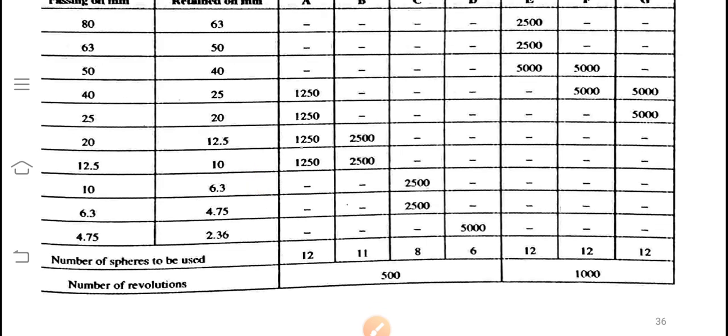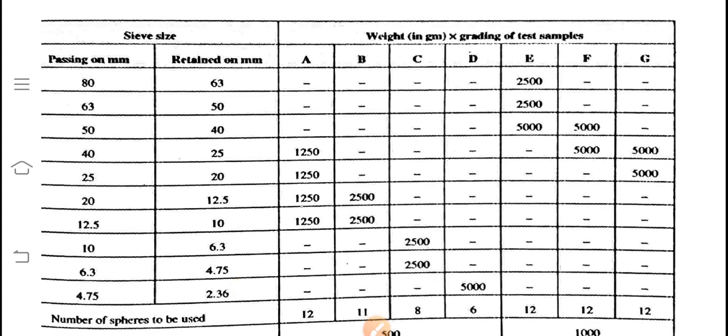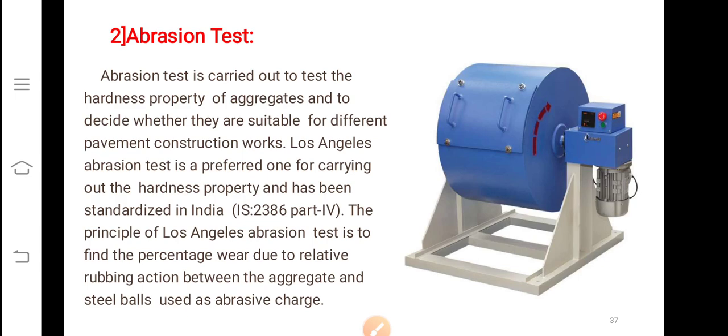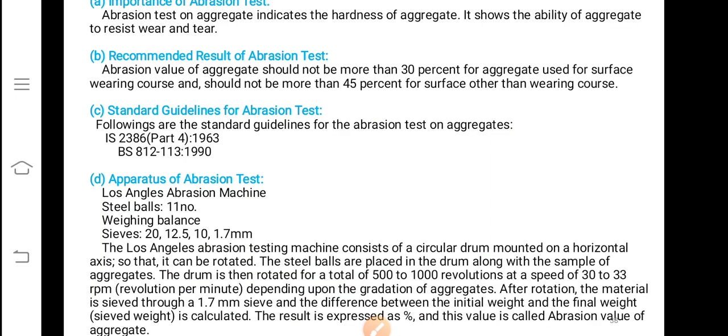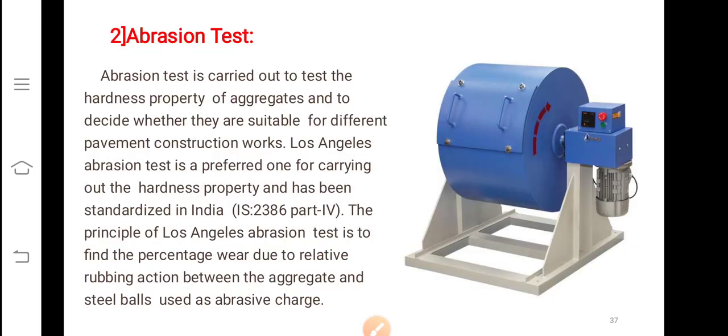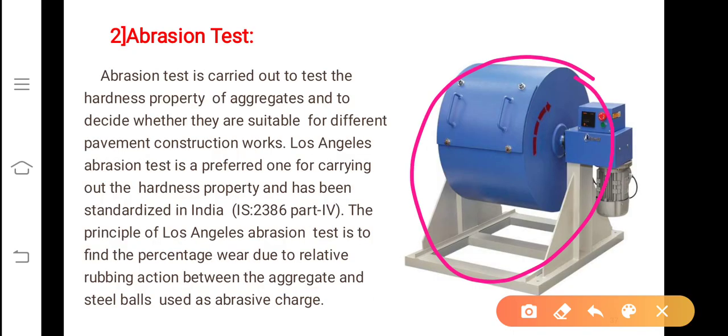And along with that in order to simulate the field condition you have to take number of spheres, that is iron balls, cast iron balls, 12 number as per the specification. This differs and size of aggregate also differs from grade to grade. If you understand the concept you can refer to the table and take conveniently whatever is required. This is the apparatus which we use for conducting Los Angeles abrasion test.